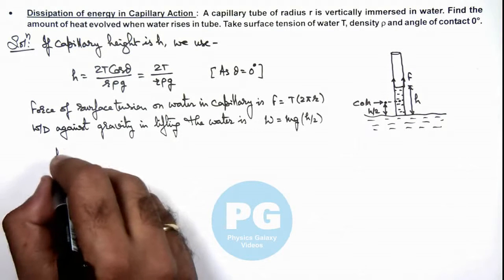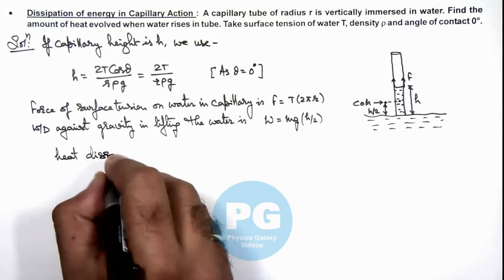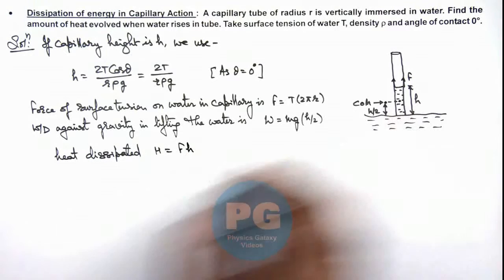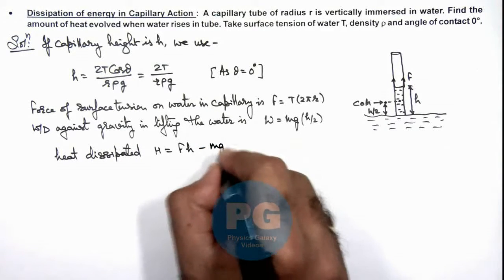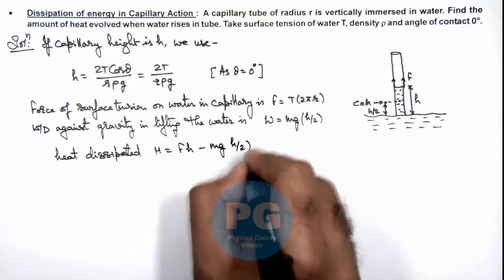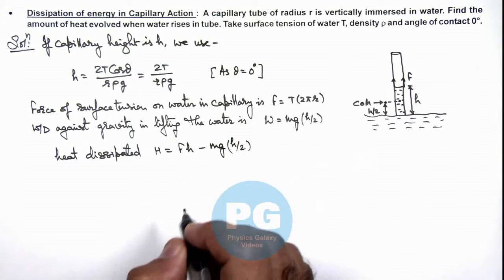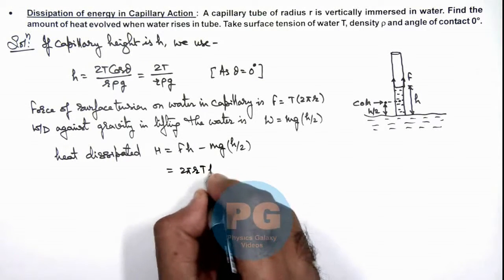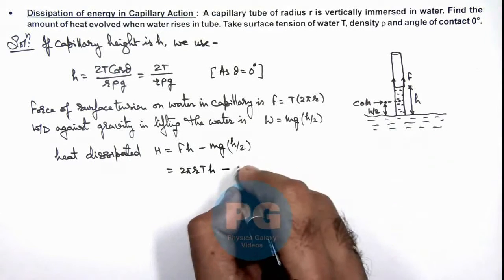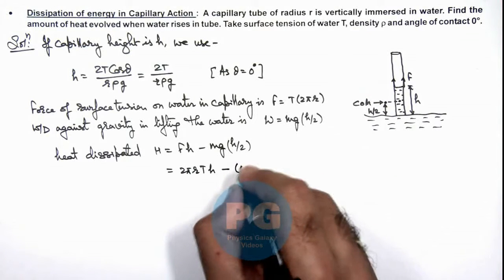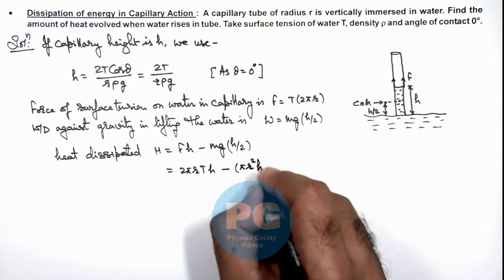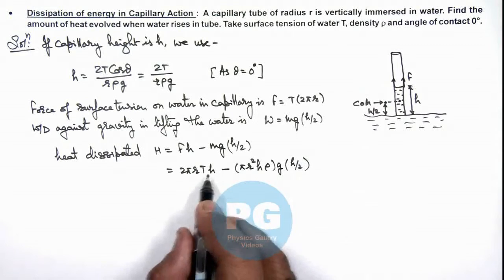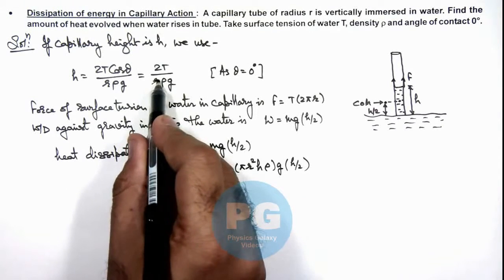So we can calculate the amount of heat dissipated, or the loss of energy, which equals Fh — the work done by the force of surface tension — minus mgh by 2, the work done against gravity. Here we write the force as 2πrT multiplied by h, minus the mass of liquid raised, which is πr²hρ, multiplied by g and h by 2. We substitute the value of h as 2T divided by rρg.